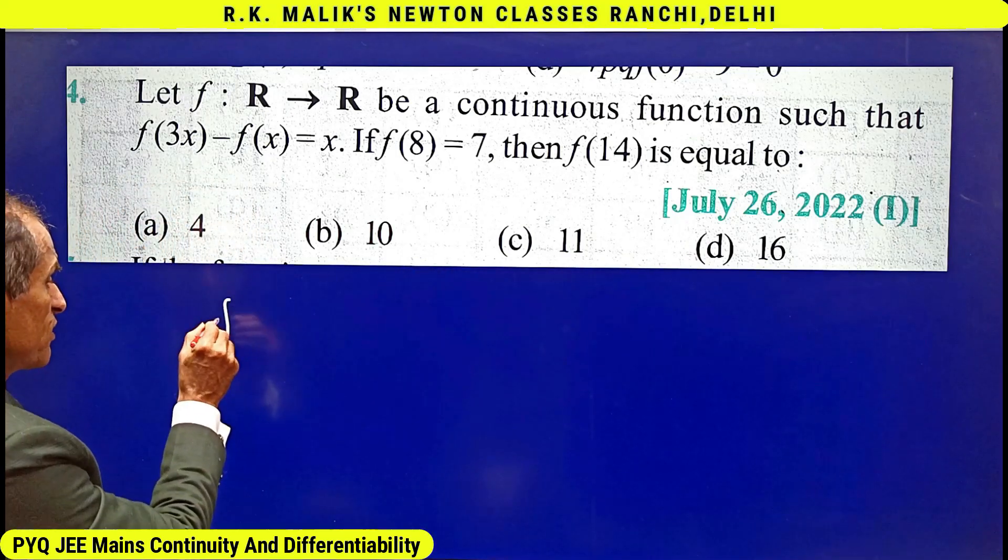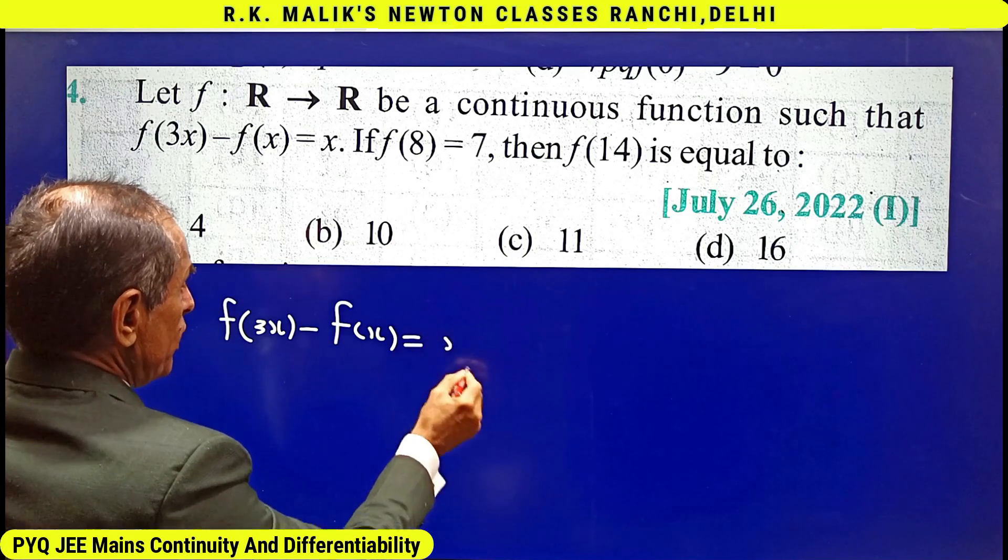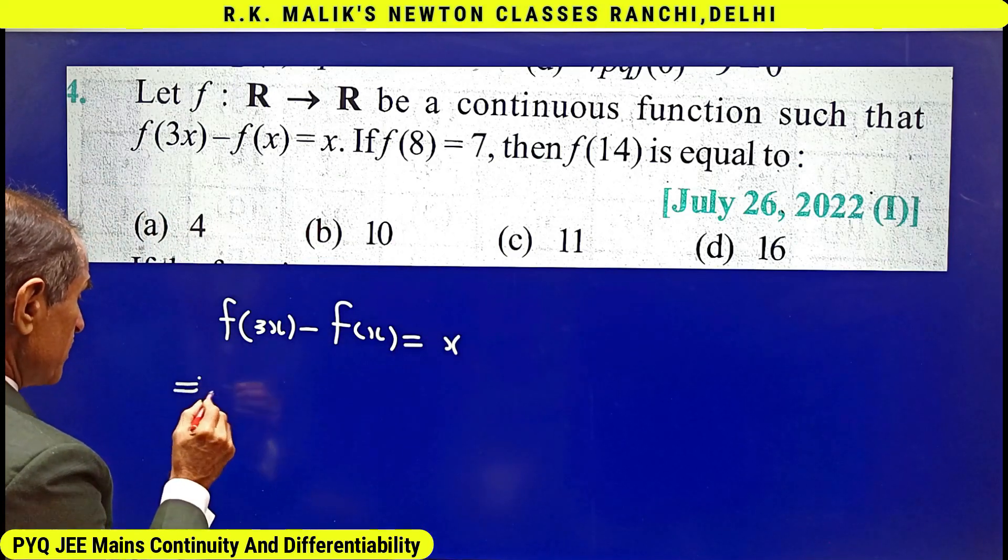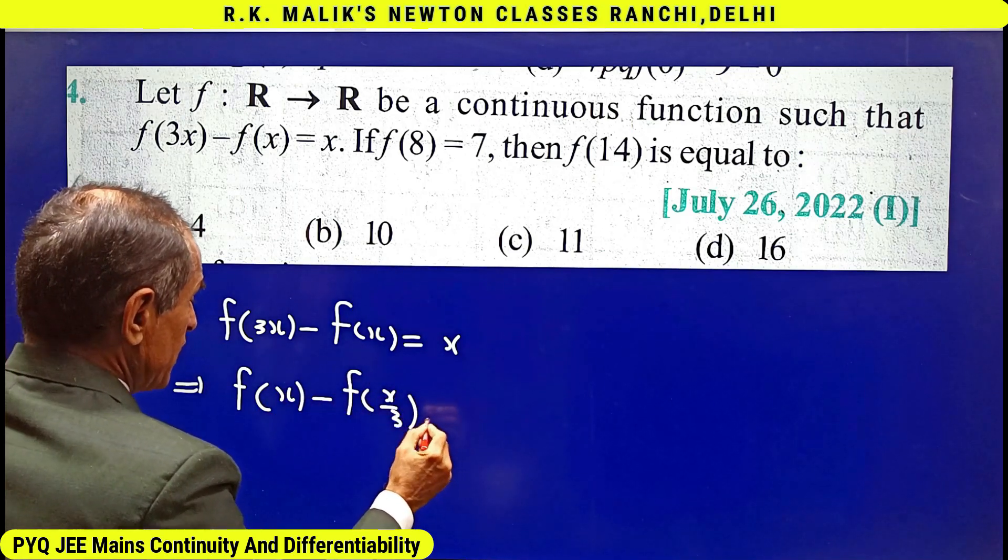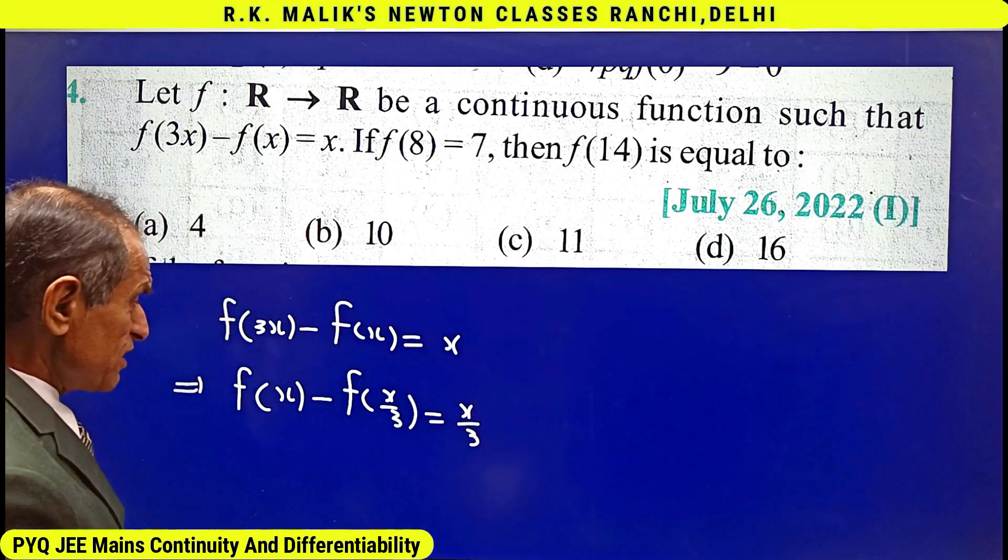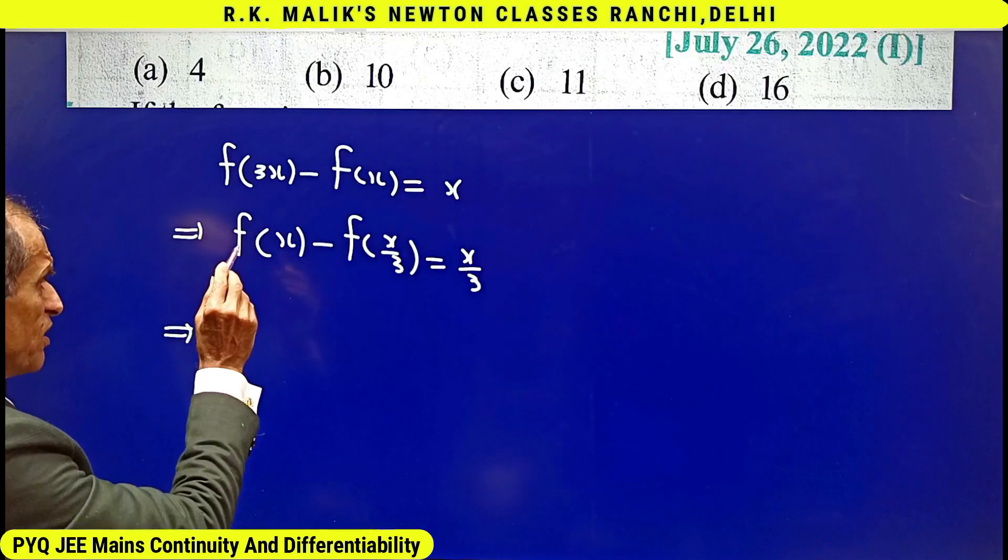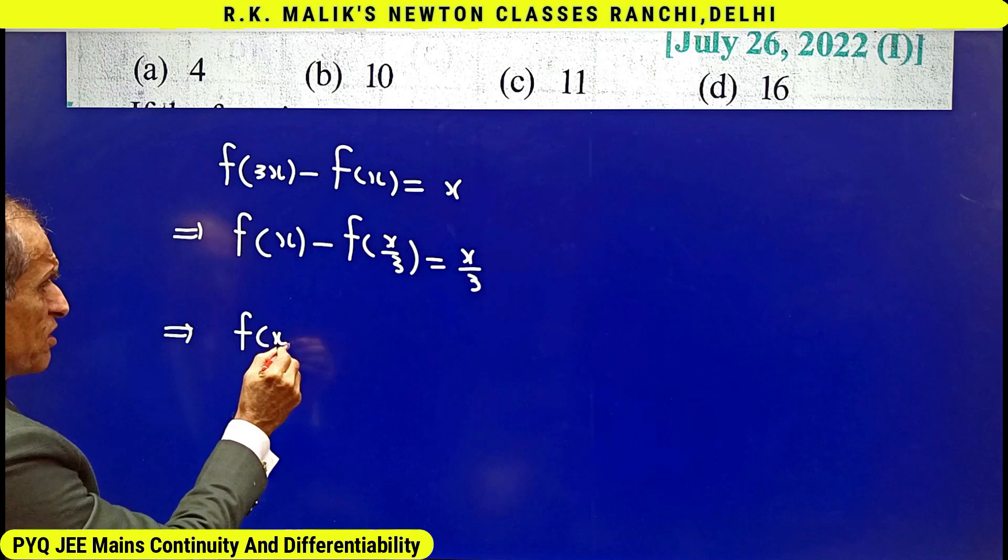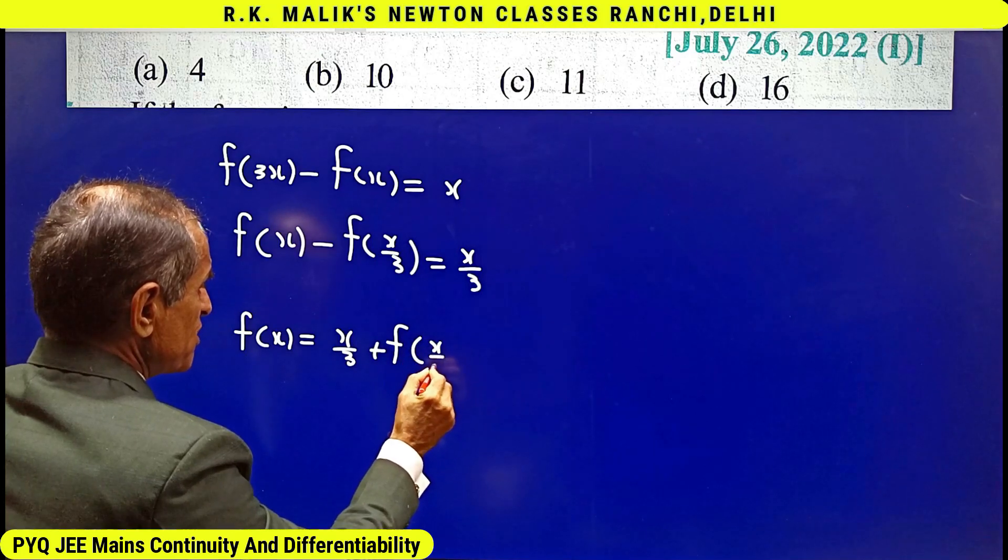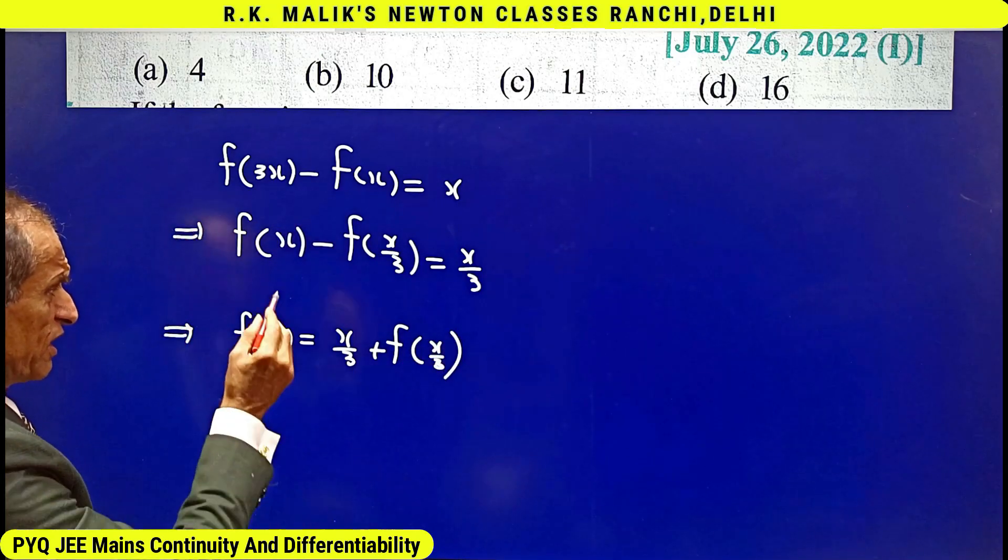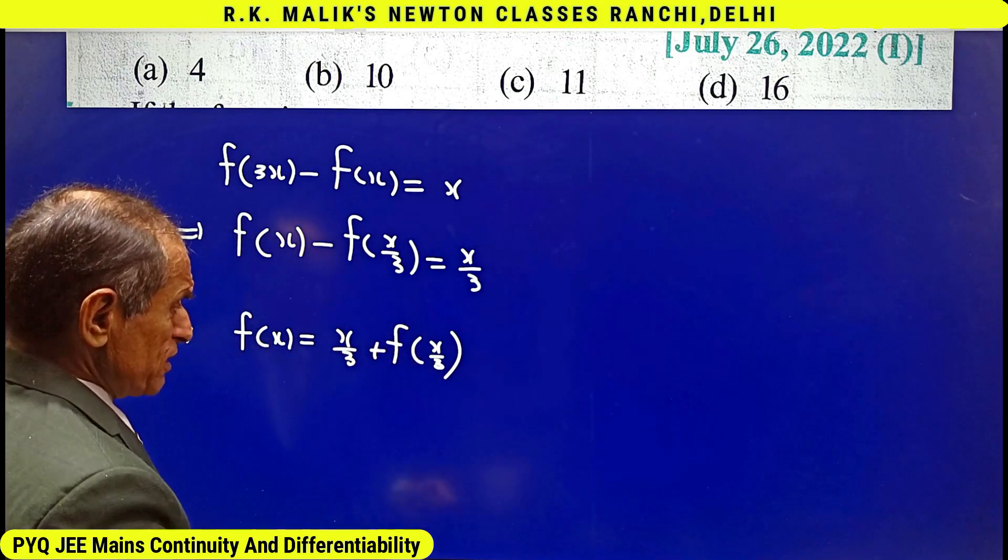It is clear that f(3x) - f(x) = x implies that f(x) - f(x/3) = x/3 by writing x/3 for x. And this means here f(x) = x/3 + f(x/3). That is, I have got the value of f(x) in terms of f(x/3), that is a smaller number.